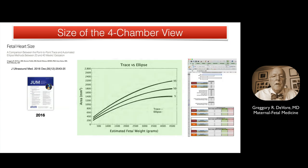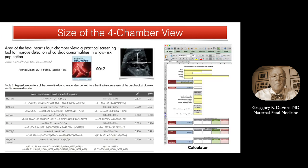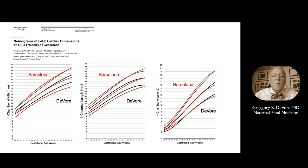These are the corresponding graphs for the area of the four-chamber view using estimated fetal weight as the independent variable. Note that the graphs for the area using the point-to-point trace and the ellipse method are almost identical. We also provided an Excel calculator for ease of computation. In a follow-up paper, we computed the area using the same diameters used for the GSI measurement, applying the same seven independent variables. A comparison with a recently published study from the Barcelona Group shows how similar the graphs are for the width, length, and area.